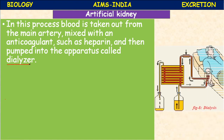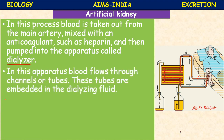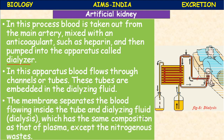In the dialyzer, the blood is taken from the main artery, mixed with an anticoagulant to prevent coagulation, and passed into the apparatus. The blood flows through channels or tubes that are embedded in a dialyzing fluid. A membrane separates the blood flowing inside the tube from the dialyzing fluid.